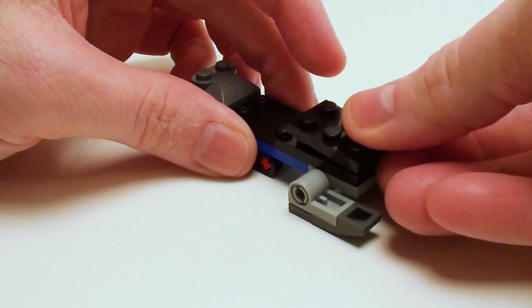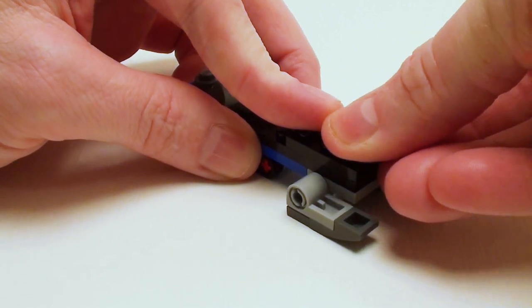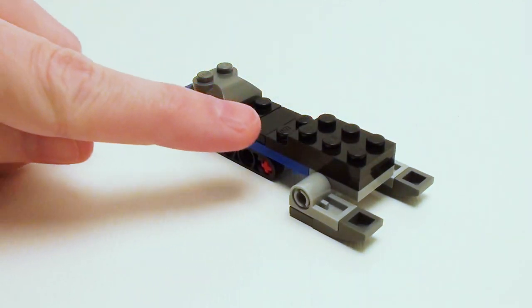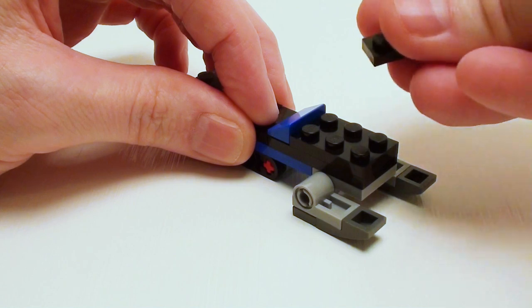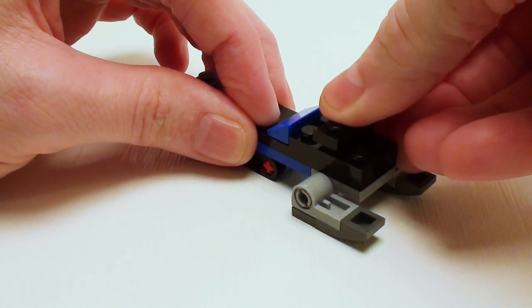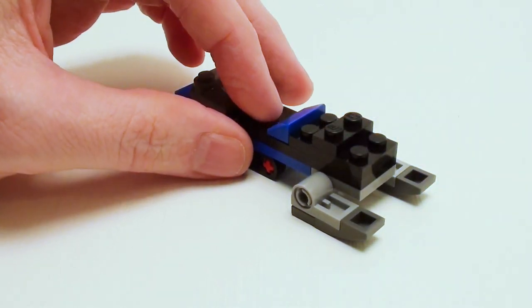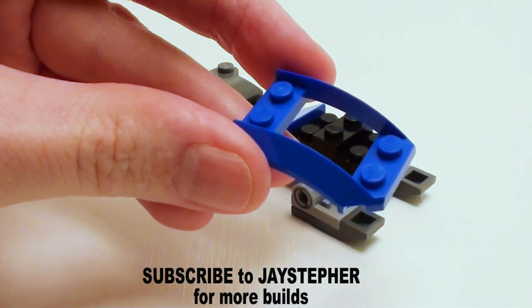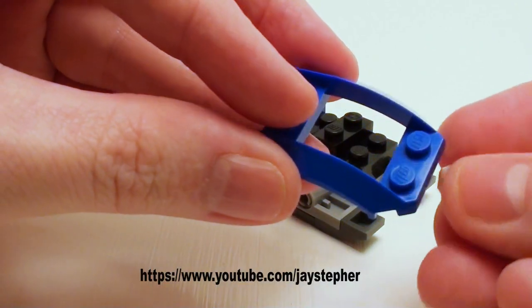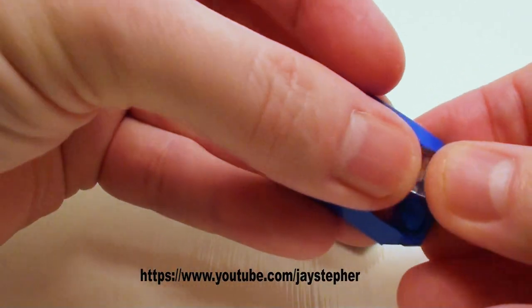For the front, start with a 2 by 3 plate in this area, a 1 by 2 slope, and in the middle a 1 by 2 plate. Take a modified 2 by 4 plate that looks like an open hood and place two transparent 1 by 1 slopes for headlights.